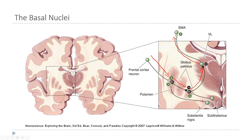The subthalamic nucleus helps maintain the baseline activity of the globus pallidus when you're at rest, while the substantia nigra keeps the putamen active. This is a simplified version of the circuit — it can get a lot more complicated. To understand what this part of the brain does, it's best to look at what happens when it doesn't work.